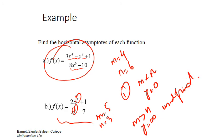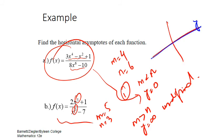This is how we find horizontal asymptotes. For the case where the asymptote is y equals 0, we can draw that line. And where y is undefined, there is no horizontal asymptote to draw. That covers how we find horizontal asymptotes.